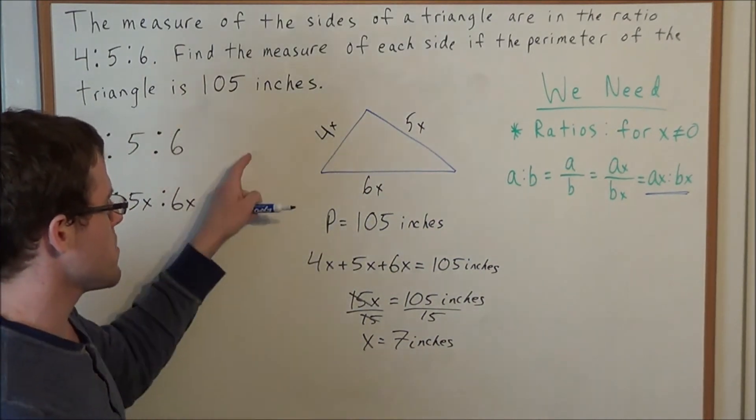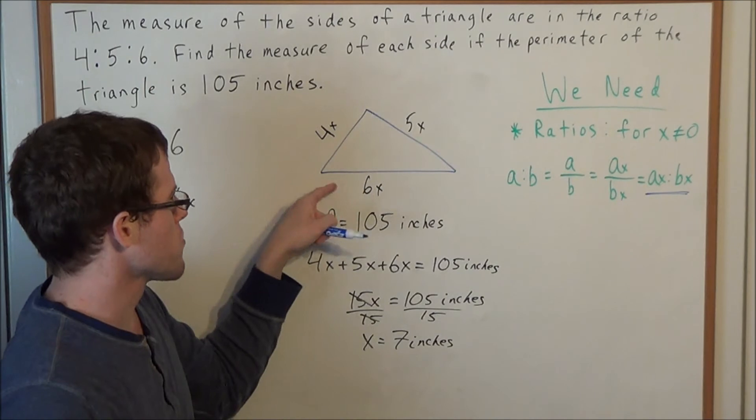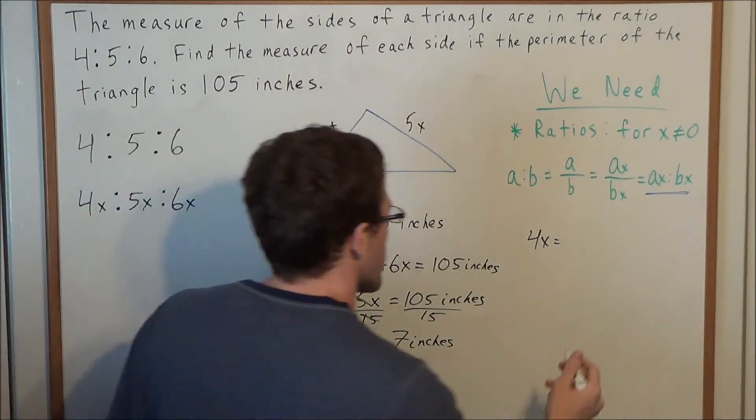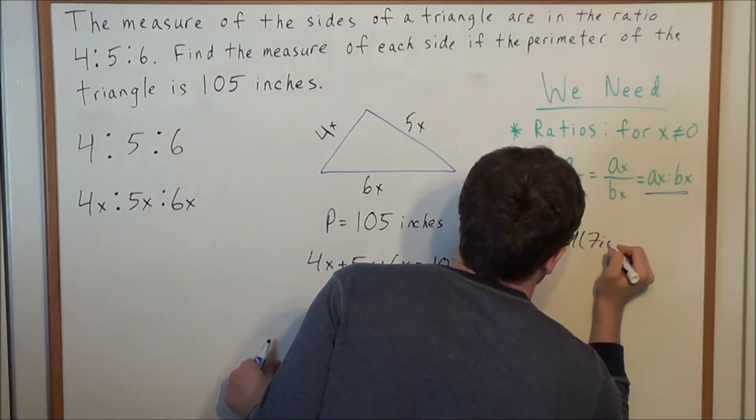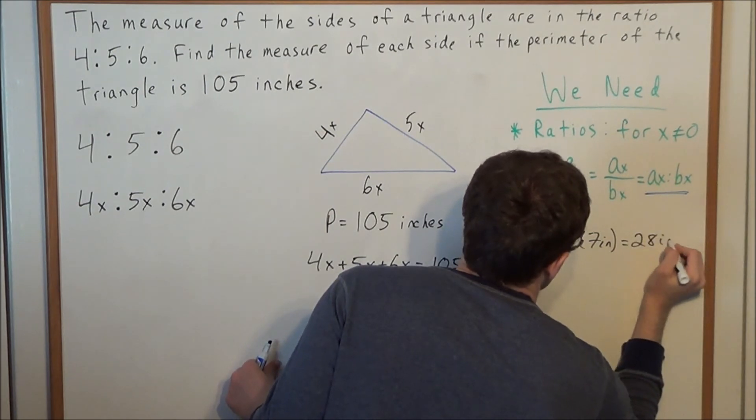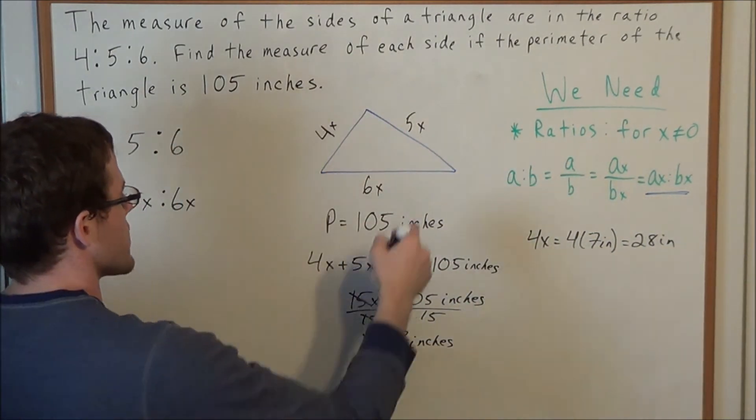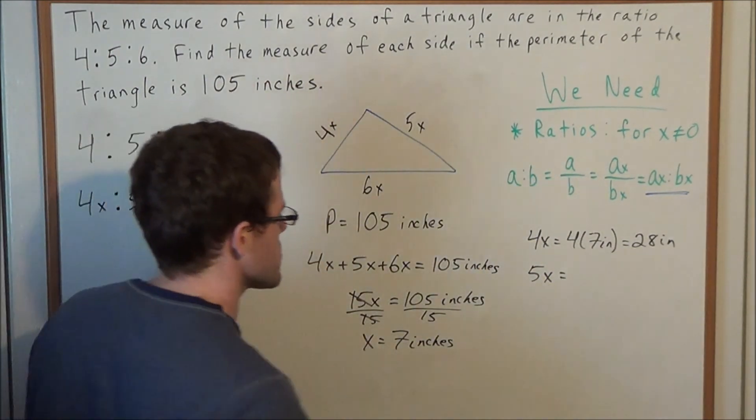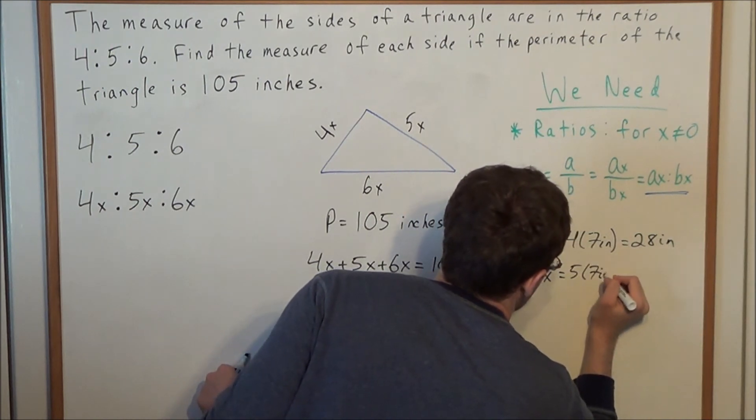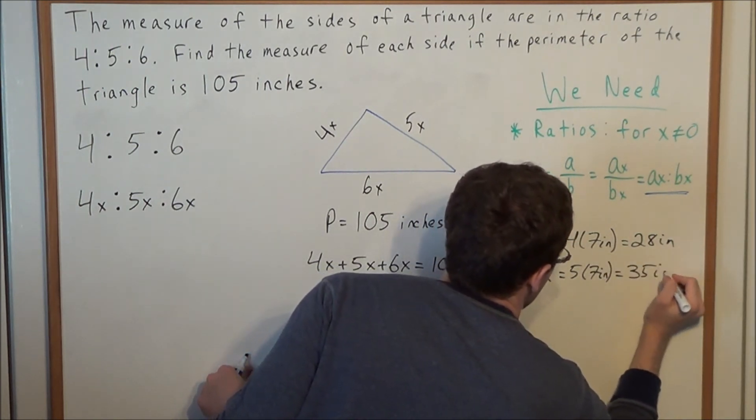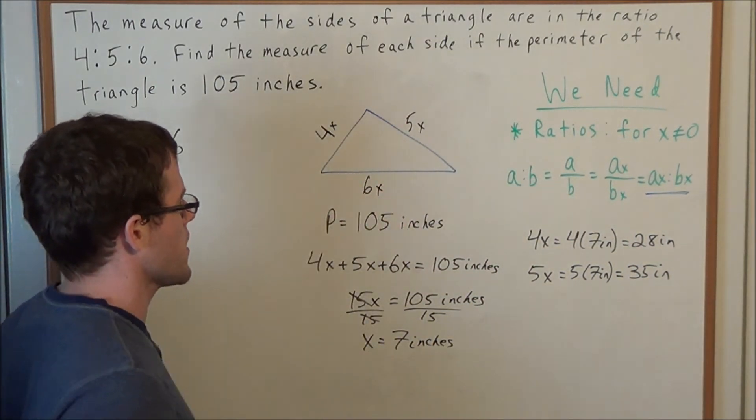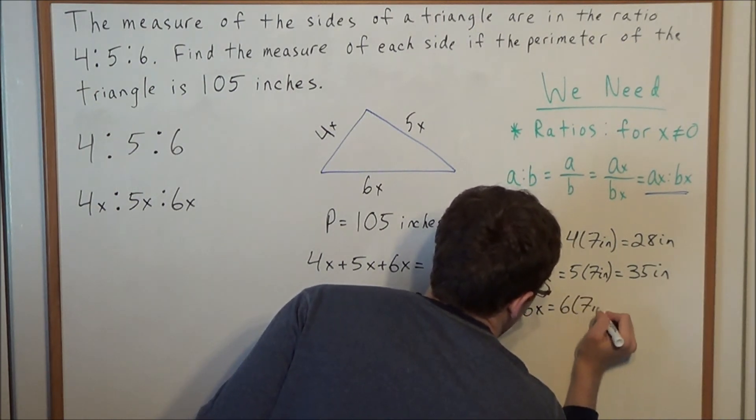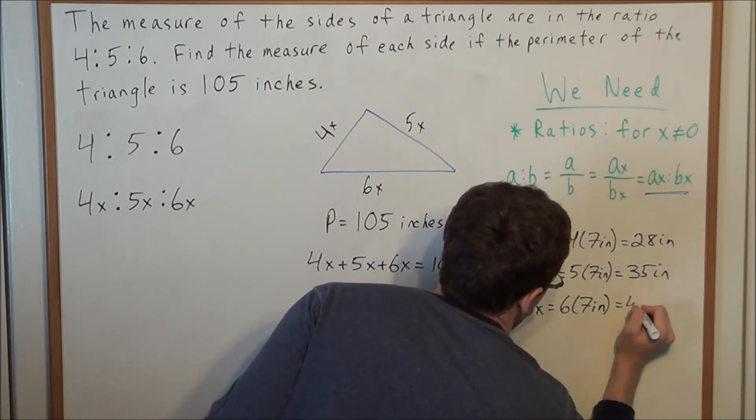The next step is to plug in x equals 7 for each of these three expressions. For 4x, we have 4 times 7 inches equals 28 inches. For the side with length 5x, we have 5 times 7 inches equals 35 inches. For the 6x side, we have 6 times 7 inches equals 42 inches.